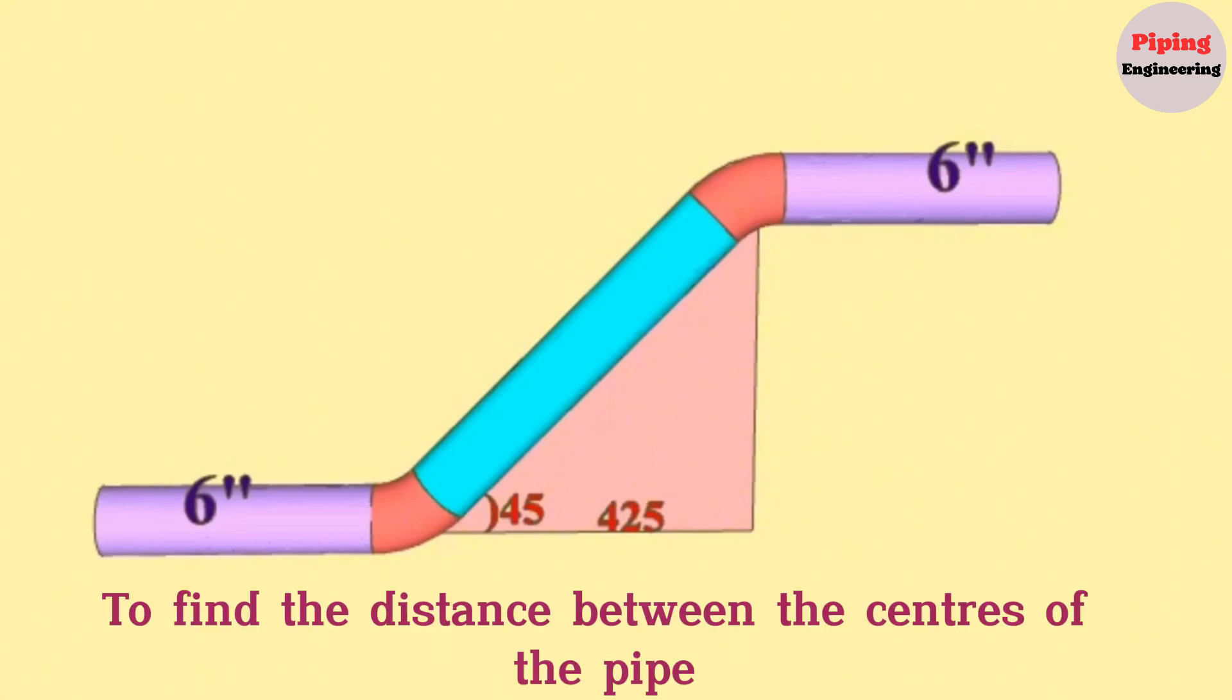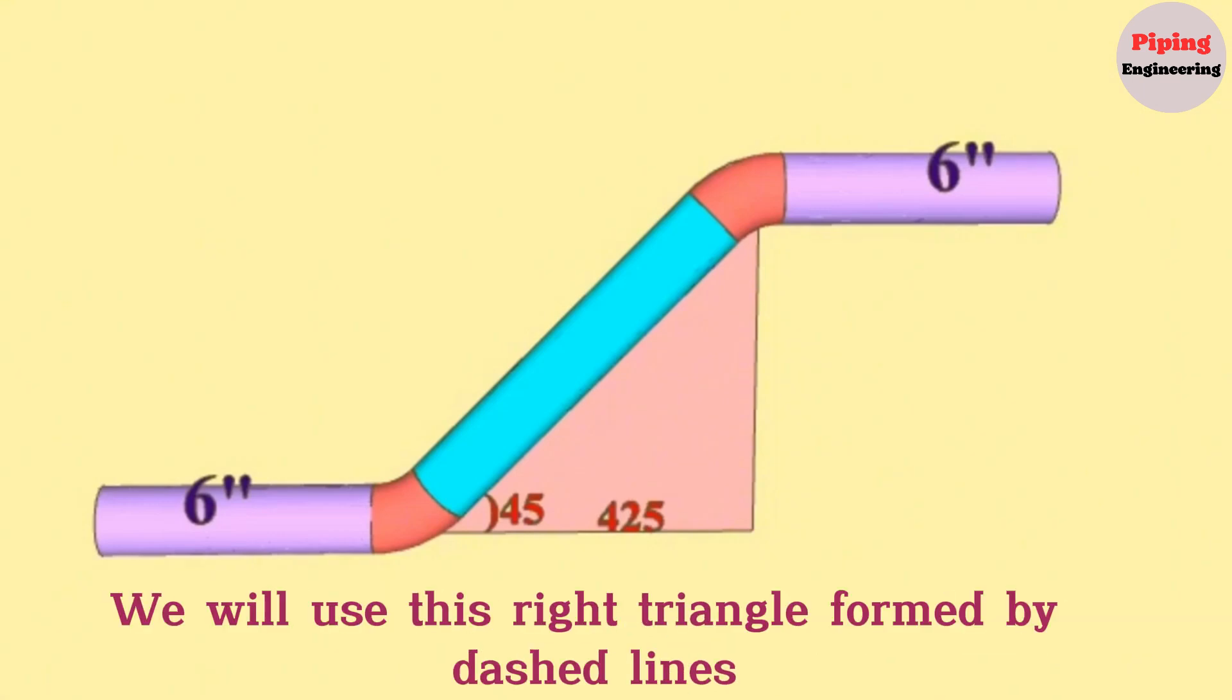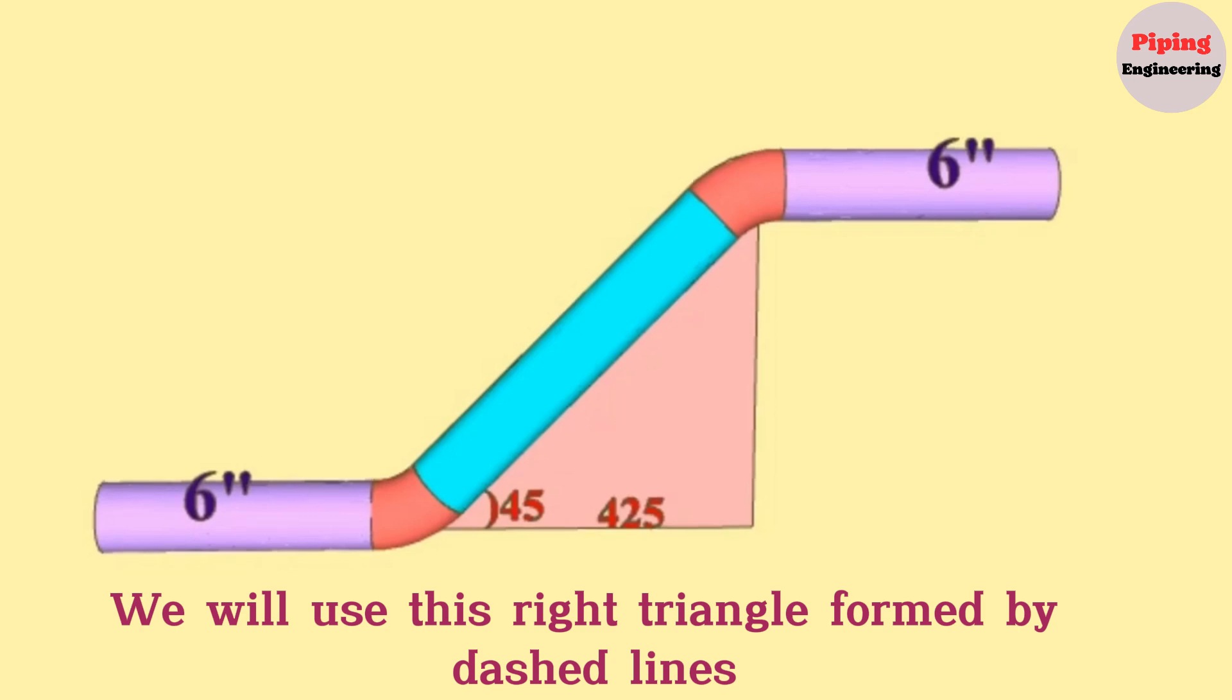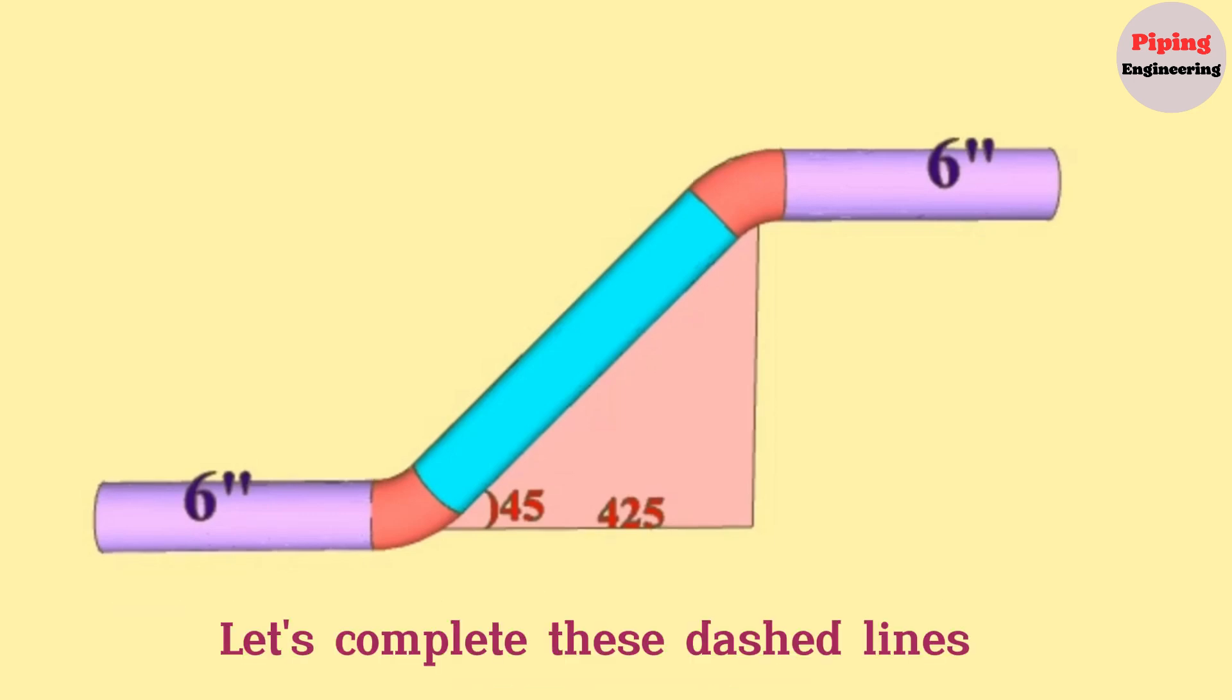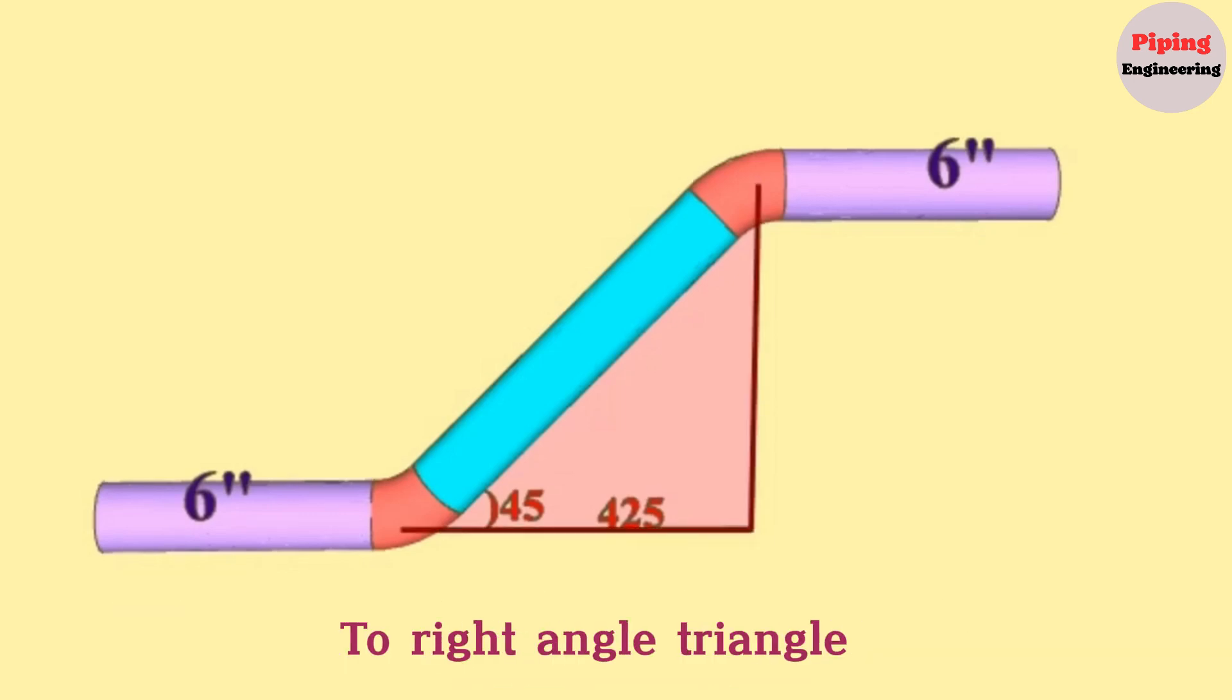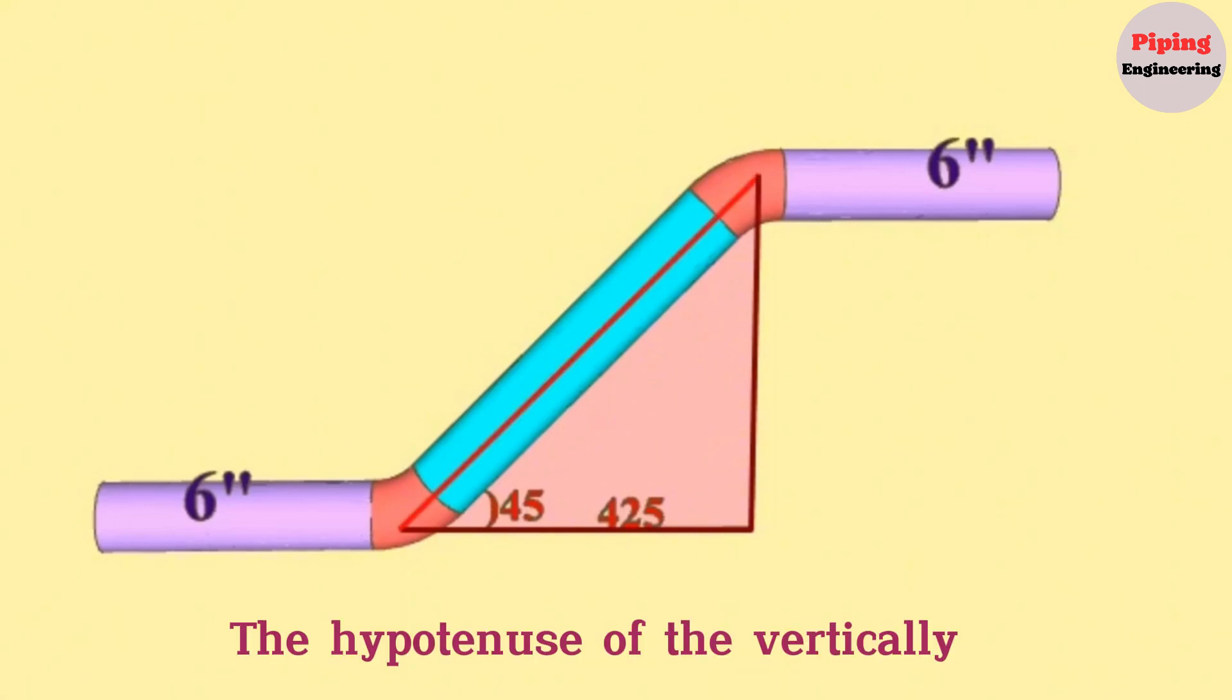To find the distance between the centers of the pipe elbows, we will use this right triangle formed by dashed lines. Let's complete these dashed lines to a right angle triangle. The hypotenuse of the vertical right angle triangle will be the distance between the elbows in the pipeline.